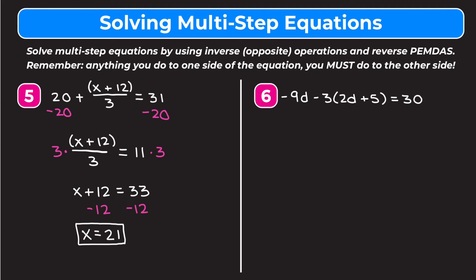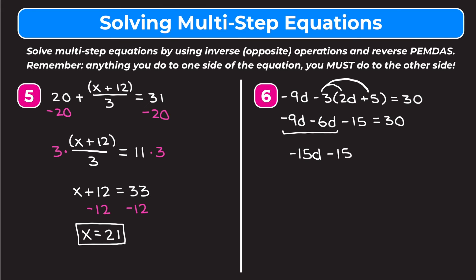Example 6 is negative 9d minus 3 times the quantity of 2d plus 5 equals 30. Our first goal is to get the d terms isolated, but 2d is inside parentheses, so we distribute the negative 3 first and then combine the d terms. Distributing: negative 3 times positive 2d is negative 6d, and negative 3 times positive 5 is negative 15. Combining like terms: negative 9d minus 6d is negative 15d, giving us negative 15d minus 15 equals 30.